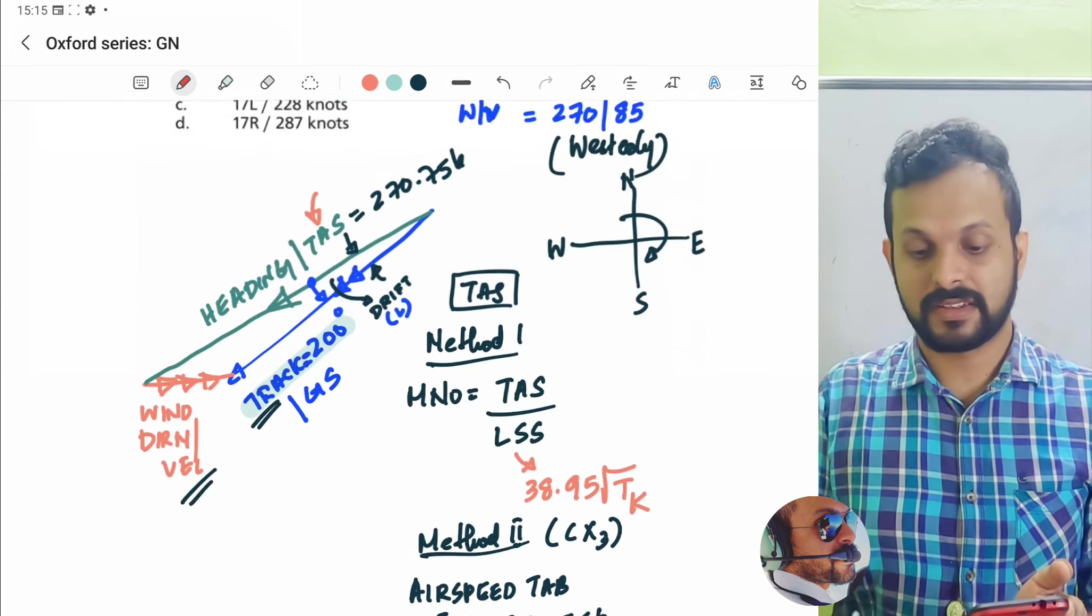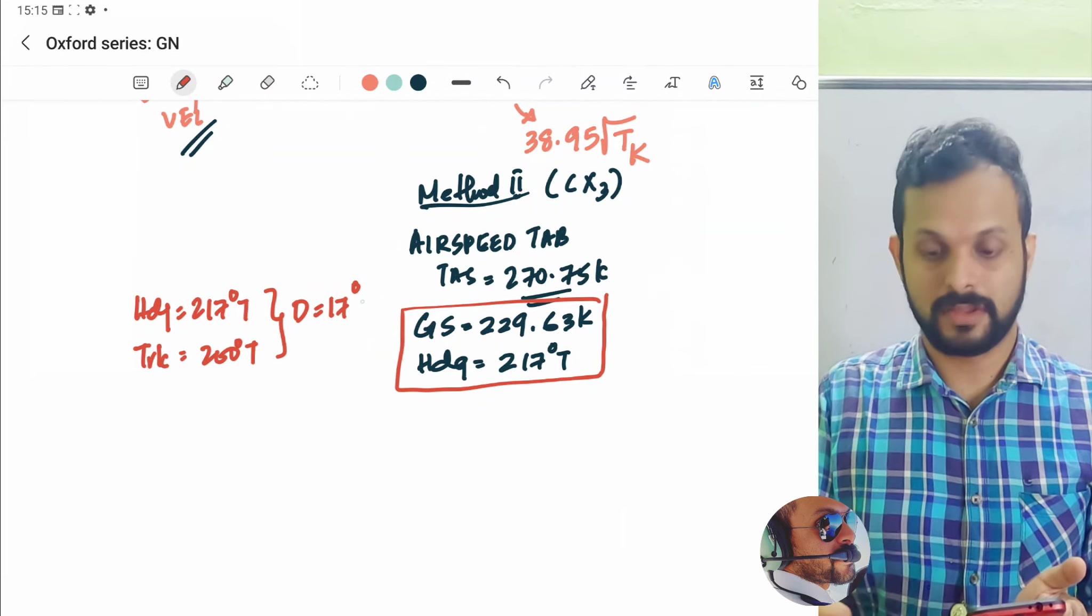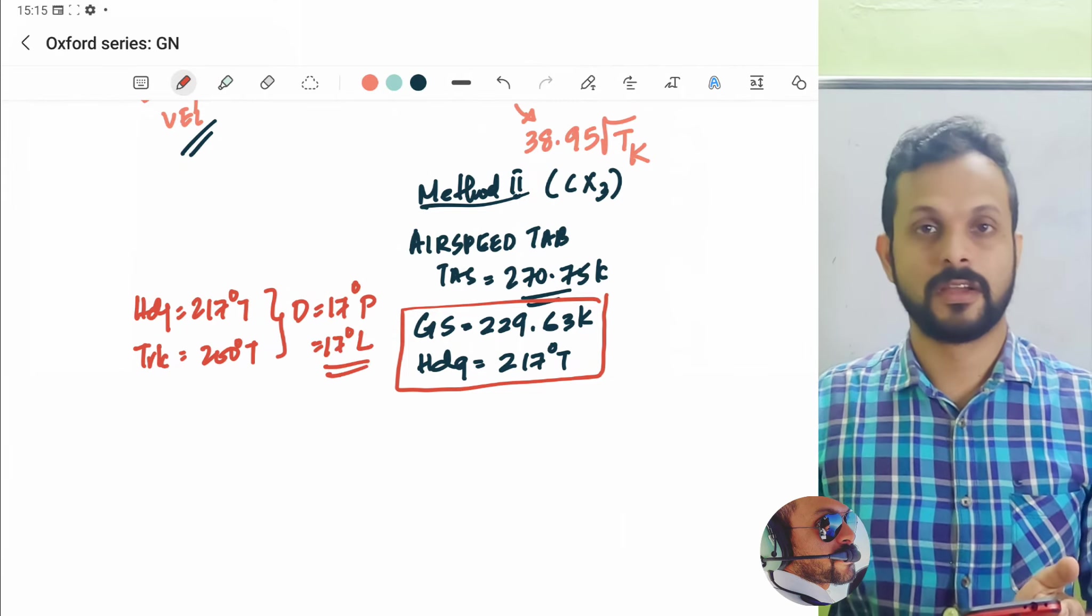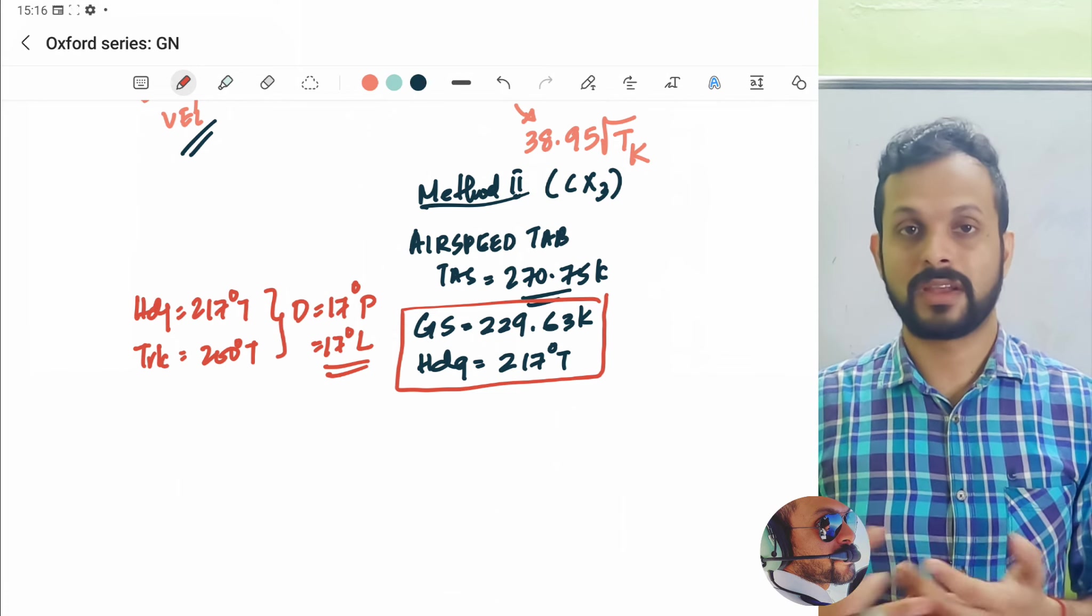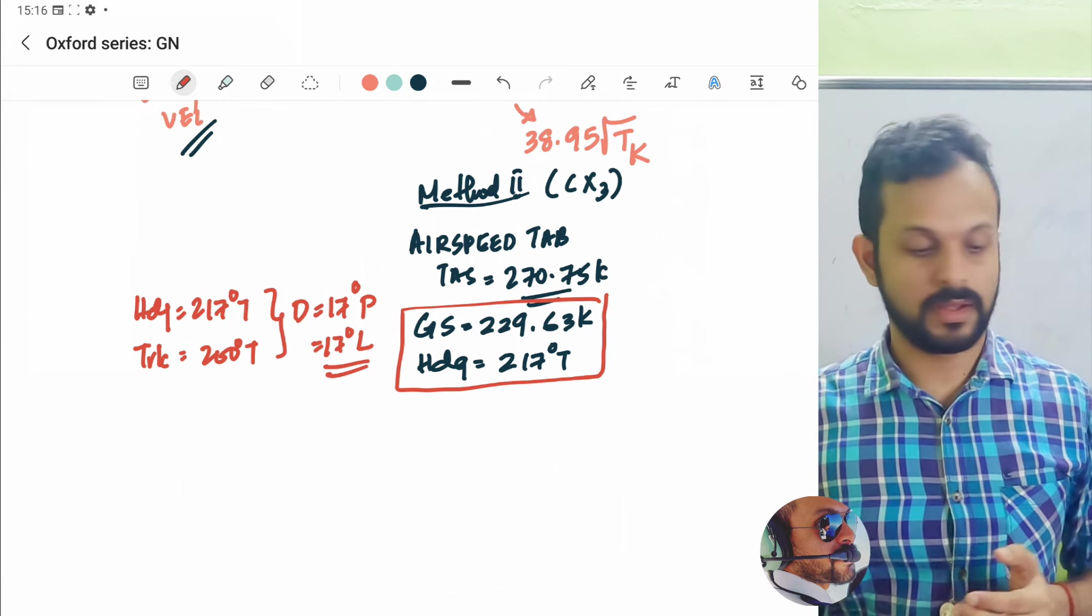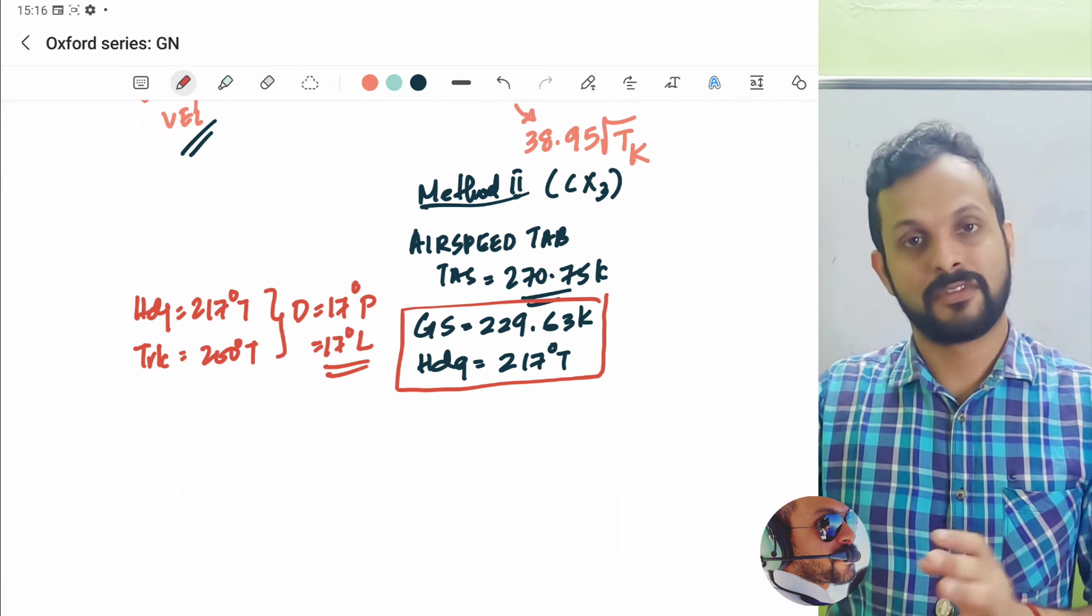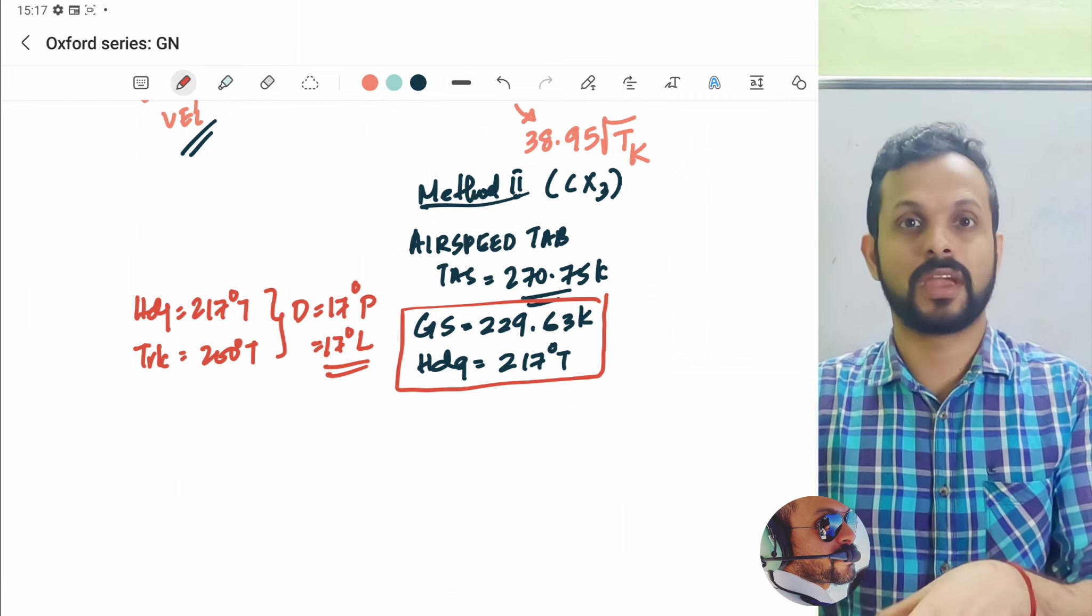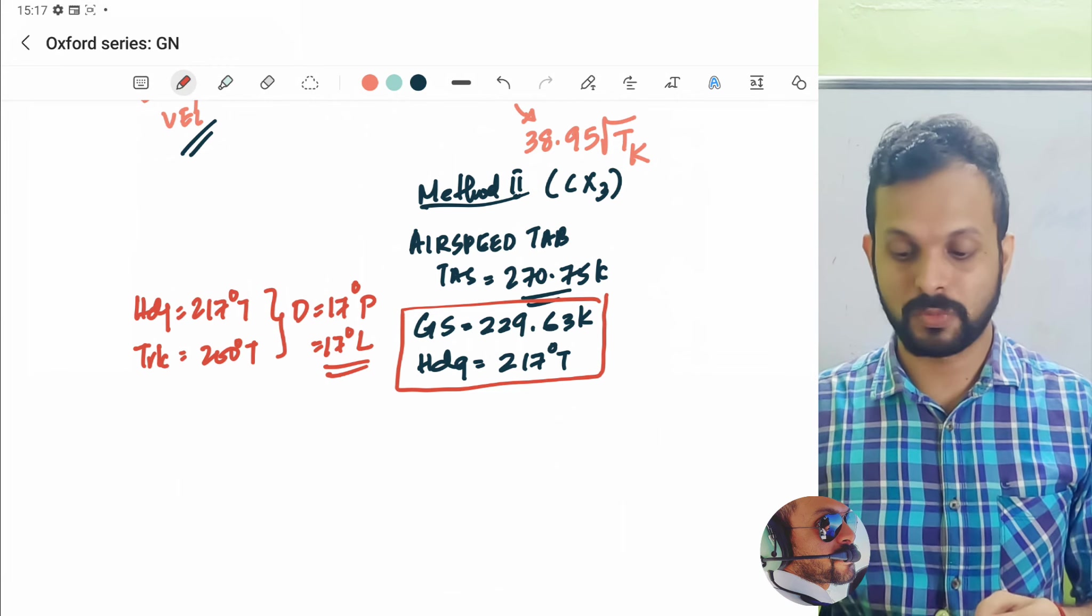Now, it's always important to understand that since the track is to the left of the heading or track is actually lower value, the drift is more to the port. So it's port drift or you can write 17 degrees left drift. Now, drift is usually indicated as port or starboard. I've very rarely seen it expressed as left or right. While track error is the one that is more inclined to be expressed as left or right. But that's fine. As long as you know what it means, that's fine. So we have a drift of 17 degrees port.